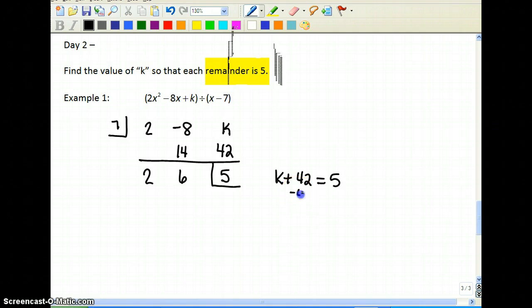Solve for k. Subtract 42. So k equals negative 37.